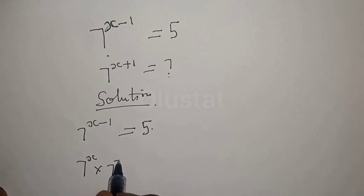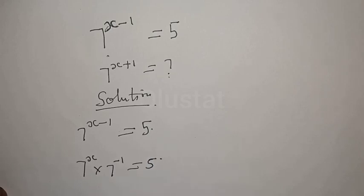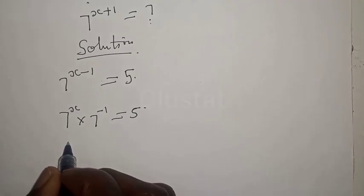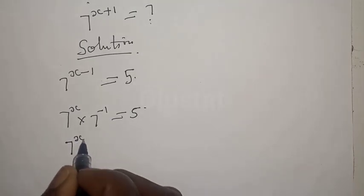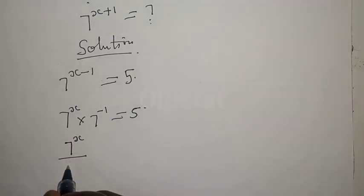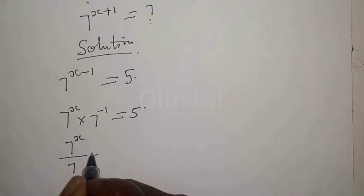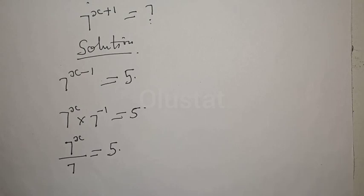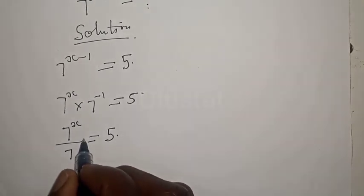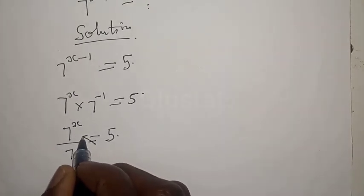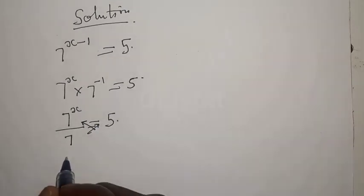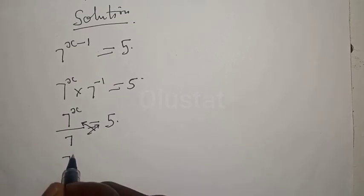This can be expressed as 7 raised to power x multiplied by 7 raised to power minus 1, which is equal to 5. Then we have 7 raised to power x over 7 is equal to 5.